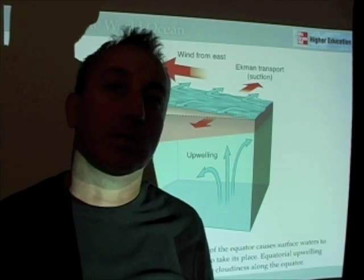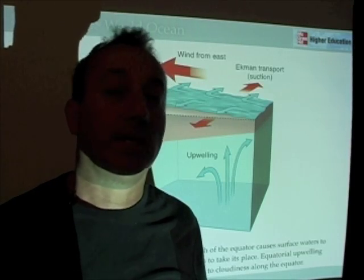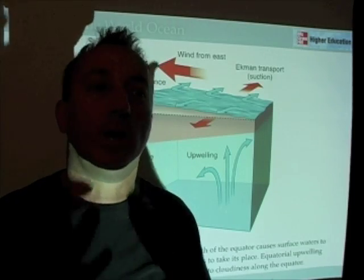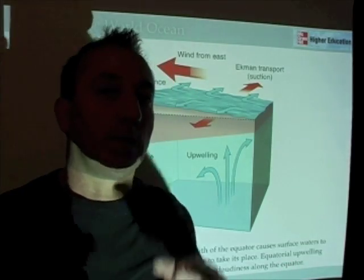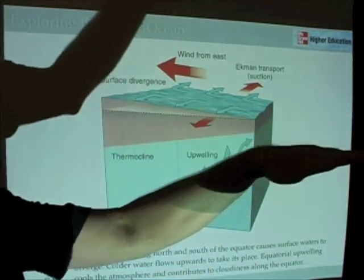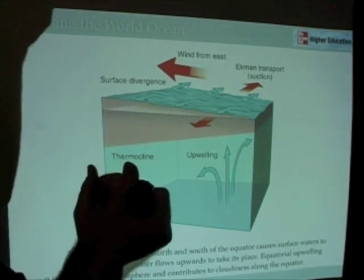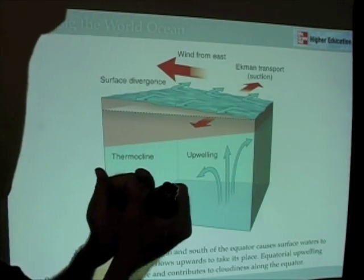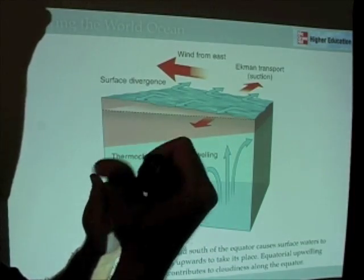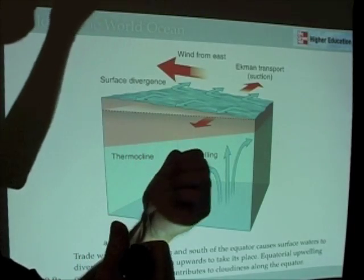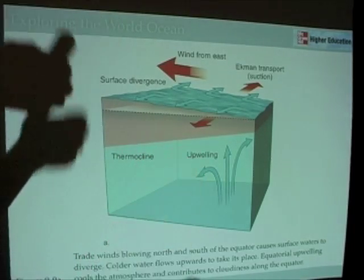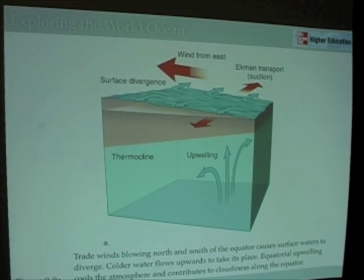If you go back to the sea surface temperature maps from the last chapter, you have upwelling colder water along the equator in the Pacific Ocean. As the wind blows across the Pacific Ocean, the part in the southern hemisphere moves to the left of the wind, and the part in the northern hemisphere moves to the right, causing upwelling along the equator.